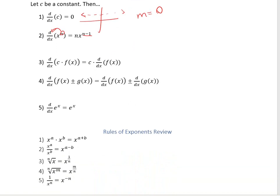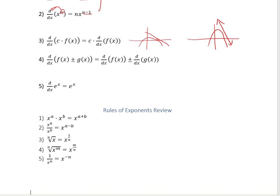If you're multiplying a function by a constant, you can kick that constant outside and then just take the derivative of the function. The reason is that if you have a function and you multiply it by a constant, it stretches the function out and also stretches the slope at the same rate. If you're adding or subtracting two functions and taking the derivative, you can take the derivative of each piece individually and add or subtract those.